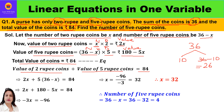So the value of 2-rupee coins is 2x and the value of 5-rupee coins is 5 times (36 minus x), or simply 180 minus 5x, and this equals 84. Opening the brackets: 2x plus 180 minus 5x equals 84. Taking like terms together: 2x minus 5x is minus 3x, and 84 minus 180 gives minus 96.